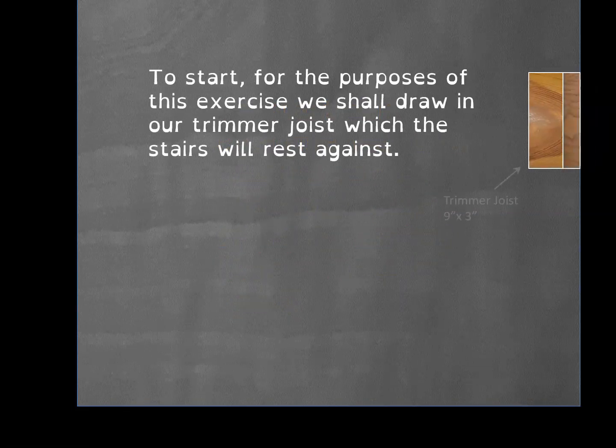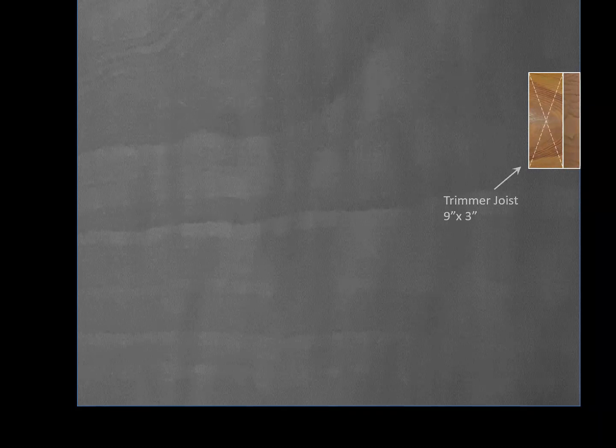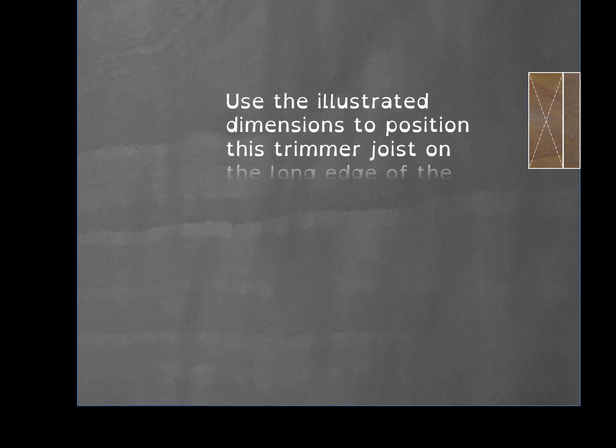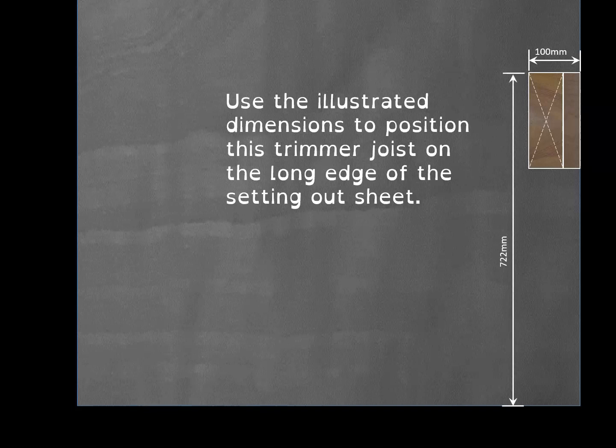To start with, we're going to draw the trimmer joist that the stairs will rest against. Measure up from the end of your sheet 722mm to the top of the joist, come in 100mm, and draw in your typical 9x3 trimmer joist with the Xs drawn in broken line. That's where your stairs are going to rest against.